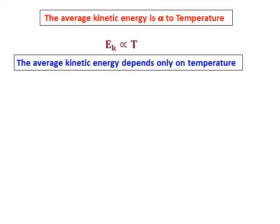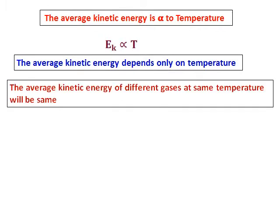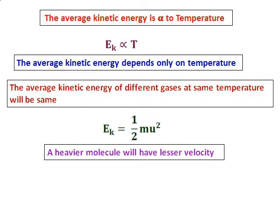The average kinetic energy is proportional to temperature and depends only on temperature. The formula is EK equals half mu squared. The average kinetic energy of different gases at the same temperature will be the same. This means if you have a heavier molecule it will have a lesser velocity — heavier molecules move slowly and lighter molecules move faster — but the average kinetic energy at a particular temperature is the same for all gases.